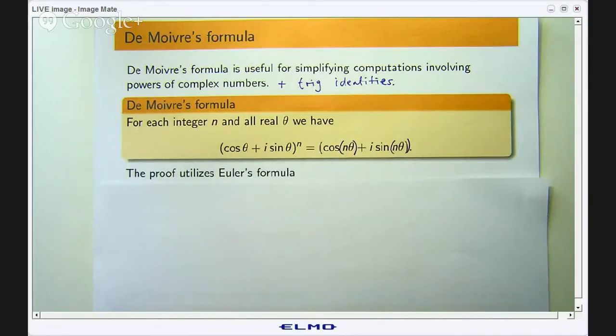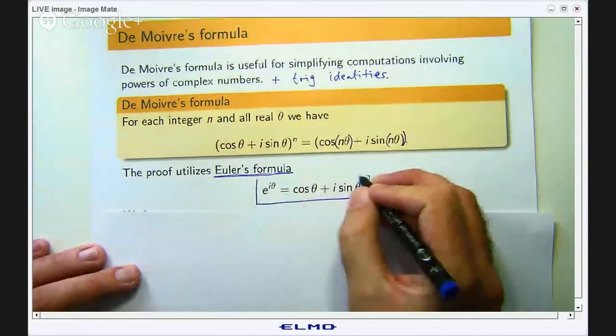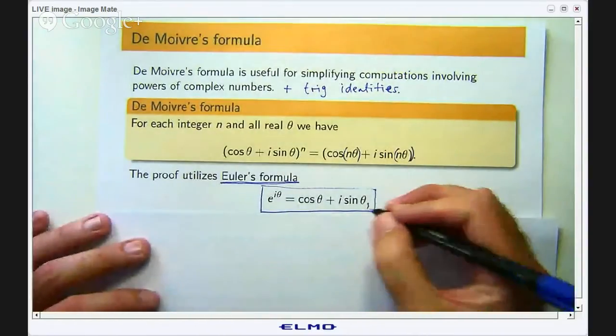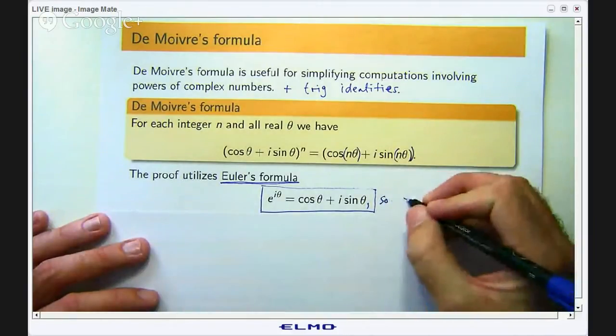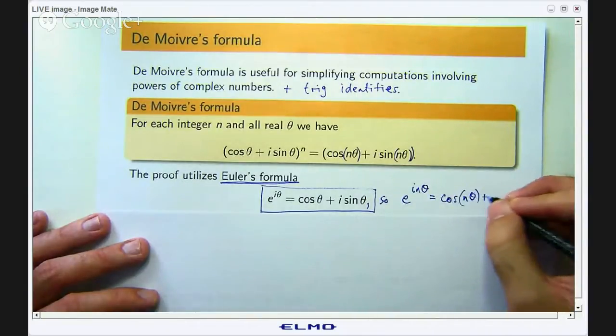Now the quickest way of proving this is using an idea called Euler's formula. Now a lot of people prove this by induction. It is not a short proof. You can do it that way, nothing wrong with that, but the proof I am going to show you is a lot quicker and the secret is using Euler's formula. So what is Euler's formula? Well, this is Euler's famous formula: e^(iθ) = cos θ + i sin θ. So if I actually go in here and replace each θ with nθ, I will get the following: e^(inθ) = cos(nθ) + i sin(nθ). We are going to use that in a minute.